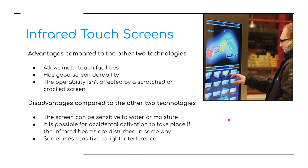Infrared touch screens are advantageous because they support multi-touch, have good screen durability, and operability isn't affected by a scratch or cracked screen — making them great for information points and POS devices in supermarkets. Disadvantages: the screen is sensitive to water or moisture, accidental activation can occur if the infrared beam is disturbed, and they can be sensitive to light interference.